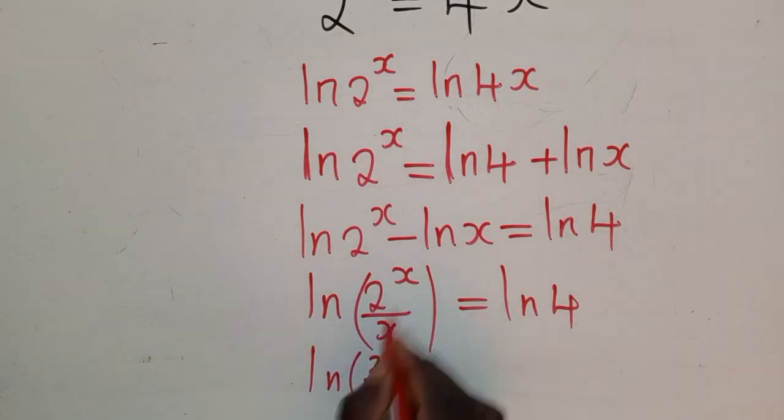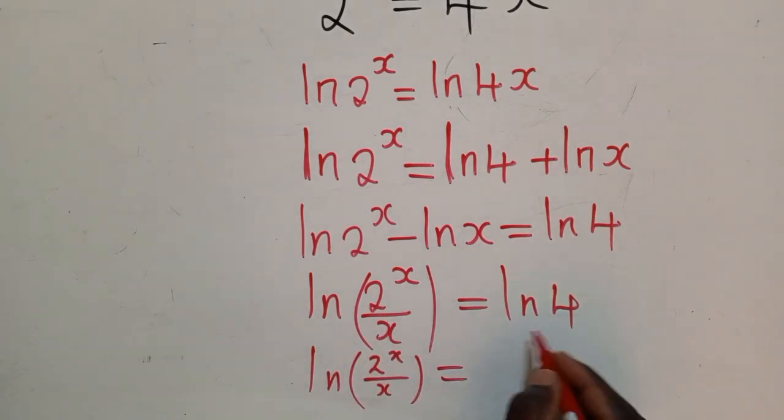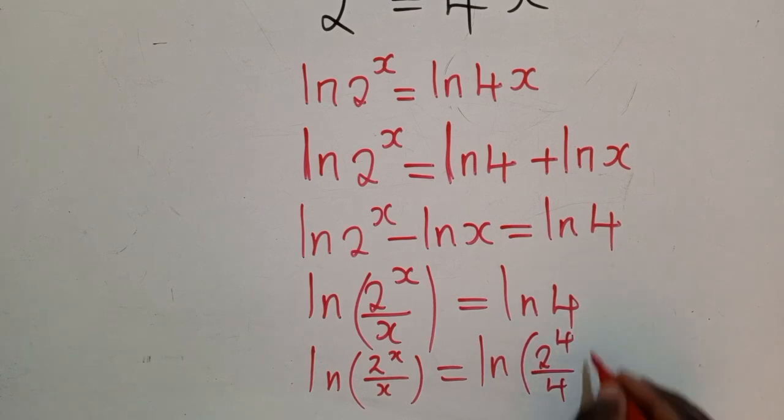But this side, I will play with it a little bit. So it will be ln of 2^4 over 4. So maybe your question may be, where is this 2^4 coming from?